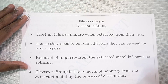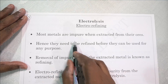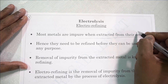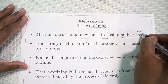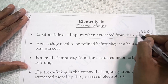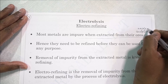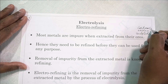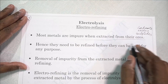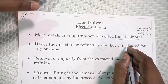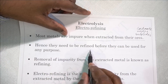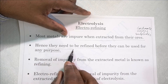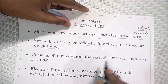Most metals are impure when extracted from their oxides or from their ores. Ores can be sulfides, oxides, carbonates, or any kind of ores. But once the metal is extracted from these ores, they have some impurities present. Now they need to be refined — refined means removal of impurities — so that they can be used for various purposes.